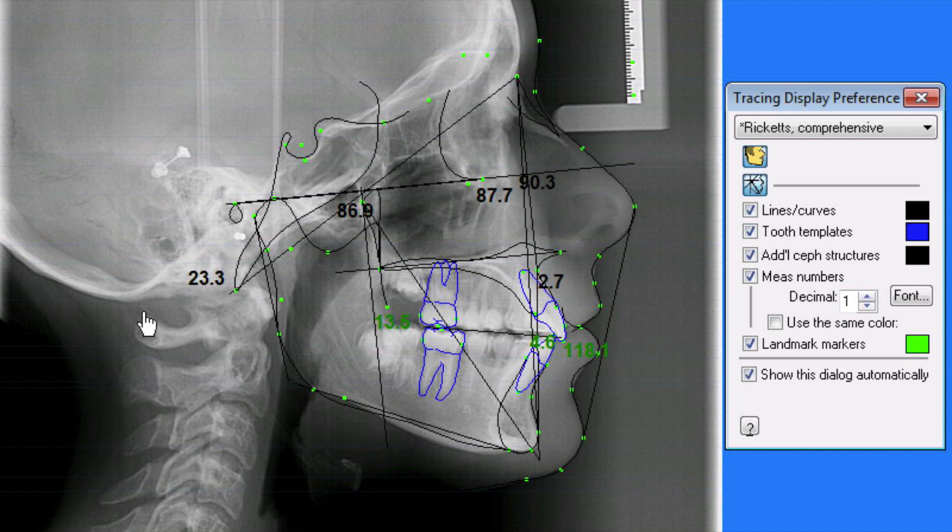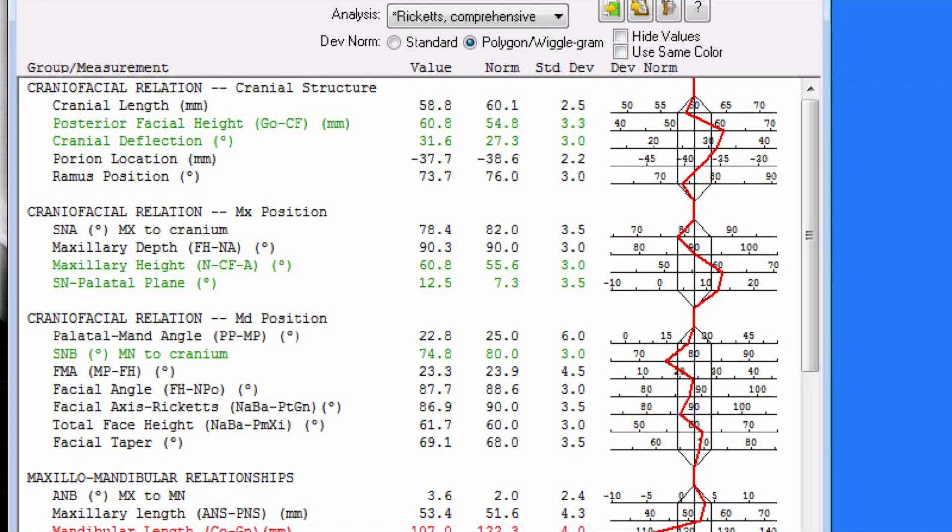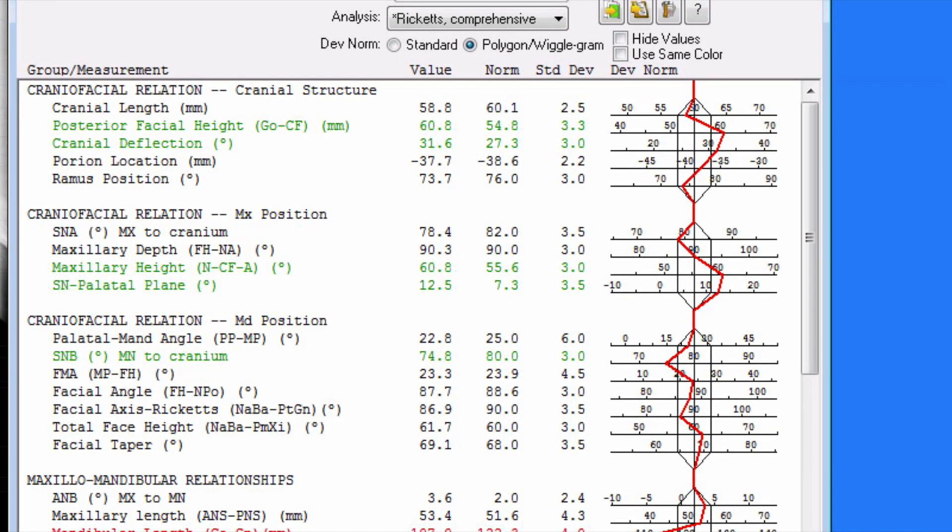For example, here you get A and B, A point-nasion-B point, and it gives you the value. You can also display the measurement table.